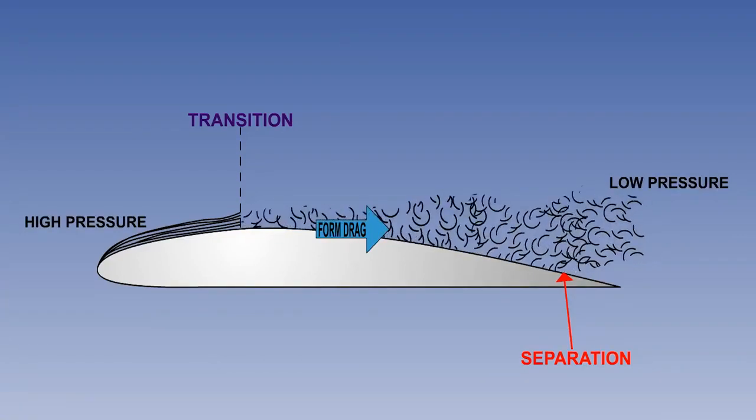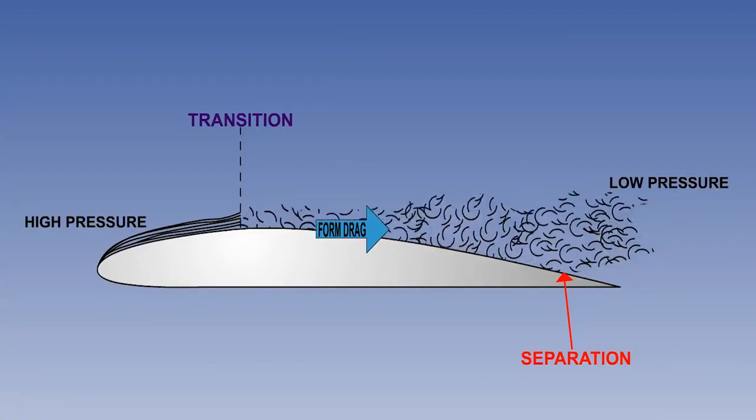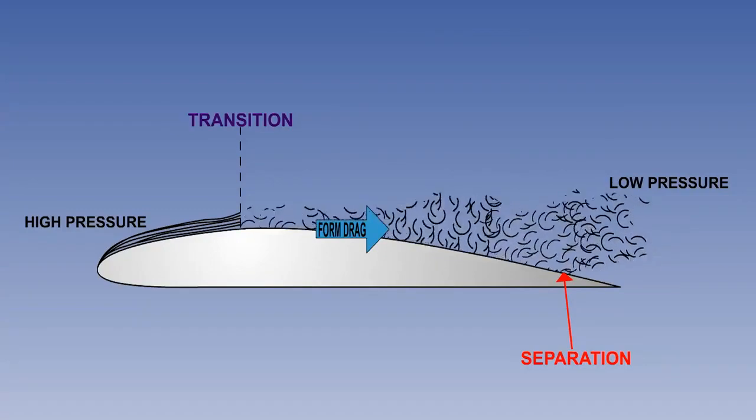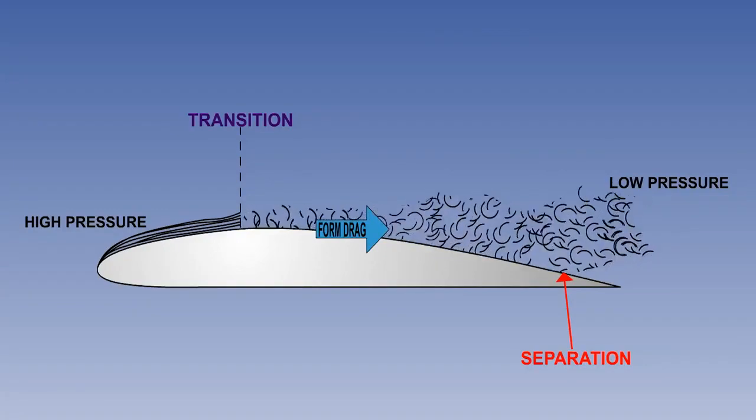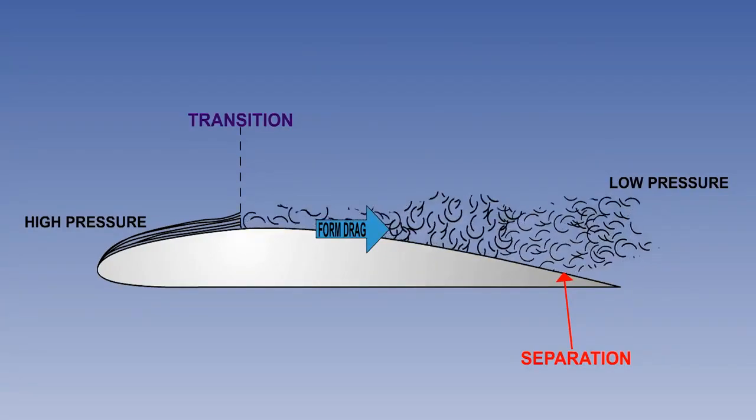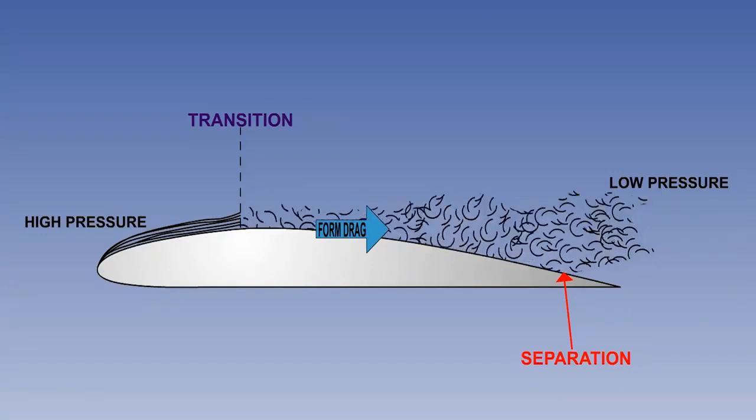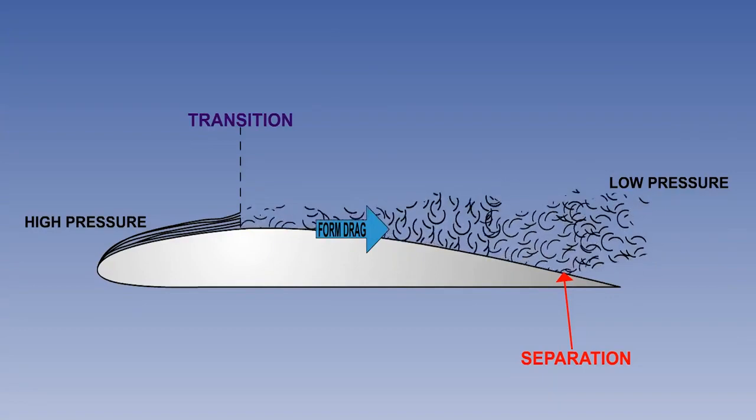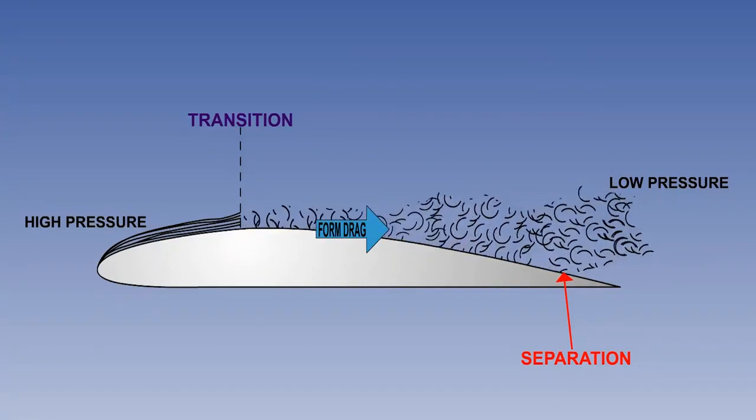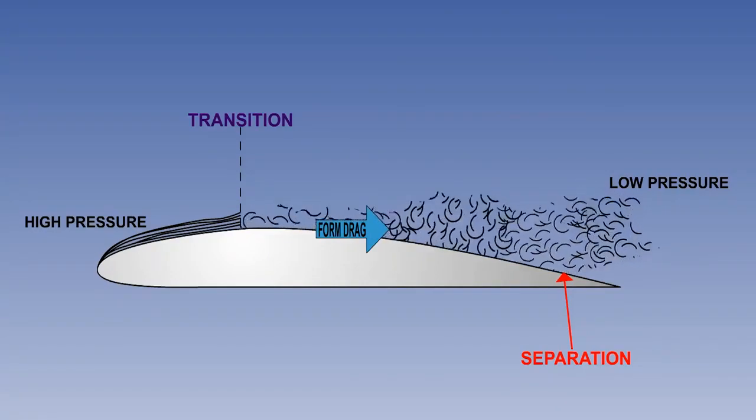The surface flow after the separation point will now be forwards. But because of separation, there will be a lower pressure at the trailing edge than at the leading edge. The aerodynamic force from high to low pressure thus acts against the direction of flight as form or pressure drag.